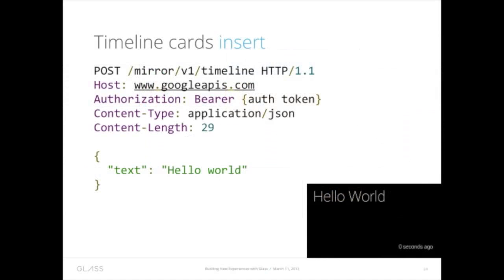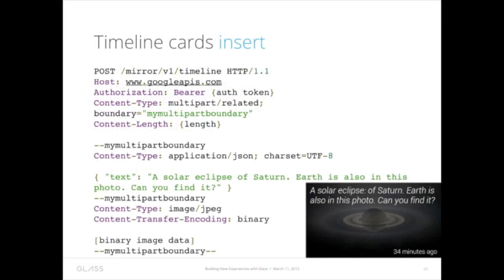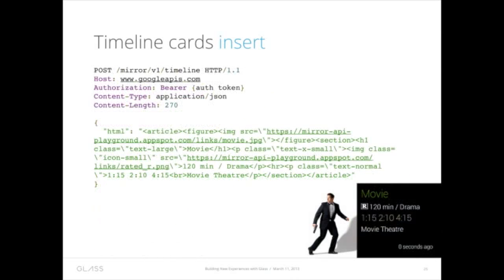Now, this is what it looks like in code, and it could be just as simple as this: you've got a text variable set to hello world, you send that to Google, and we push a timeline card to the user that says hello world. You can insert images this way using a multi-part request.